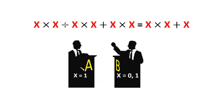According to contestant A, the value of x to this problem is 1. Then according to contestant B, the value for x to this problem is 0 and 1. Now which of these contestants do you support? Let me know that in the comment section right now.